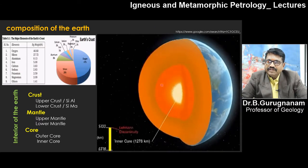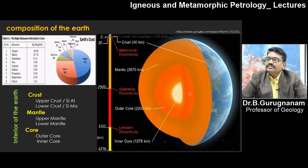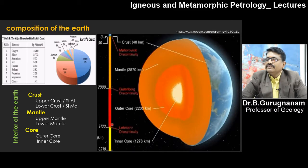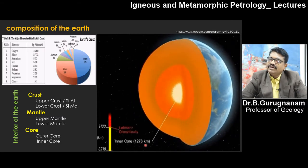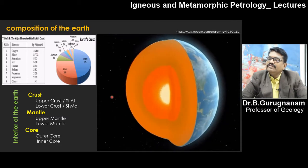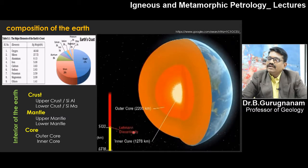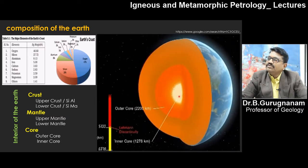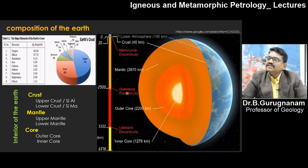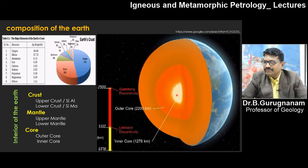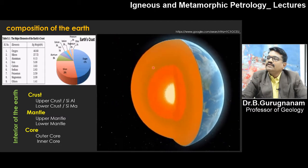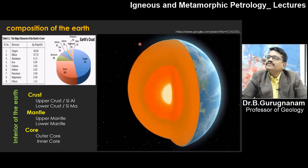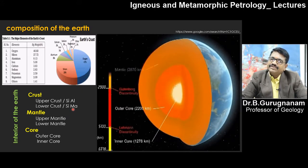Looking at the figure showing the earth divided from inner to outer parts: the inner core has a total diameter of about 1278 km. After that there is a break — the outer core, where the inner core is made up of nickel and iron in very hot molten conditions. The outer core is about 2200 km, followed by the mantle, and there is a small layer on the surface called the crust, about 40 km thick.